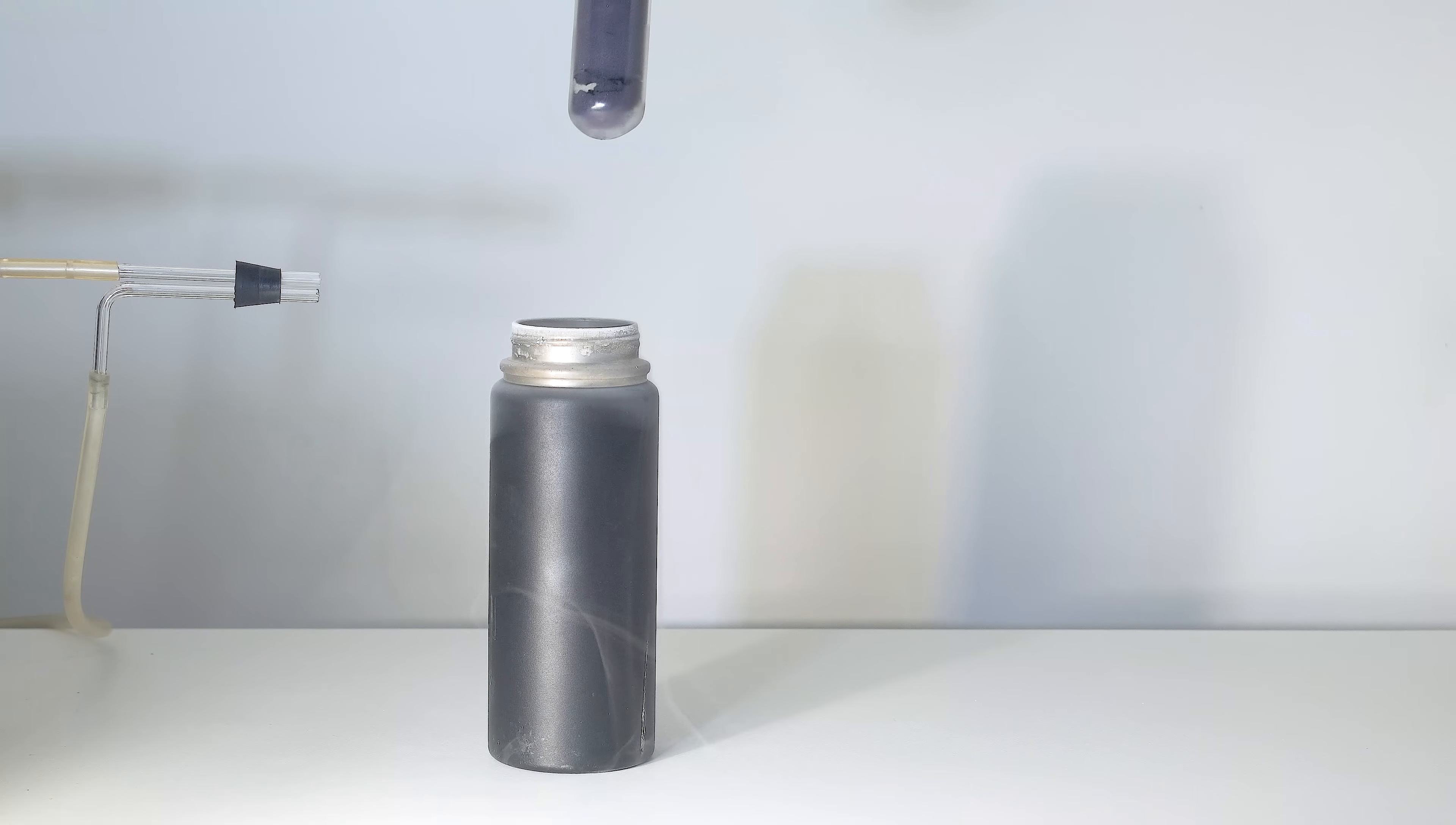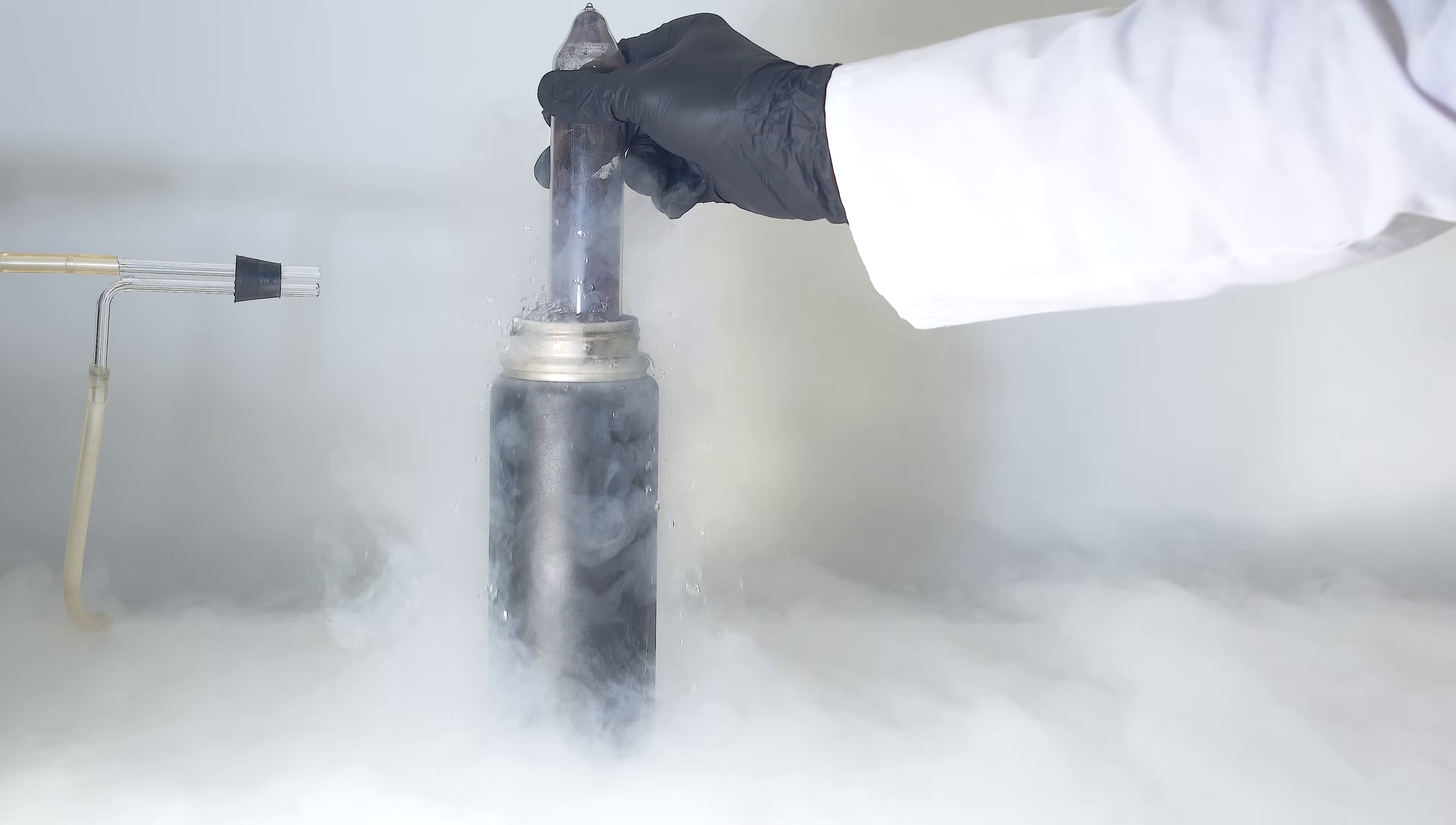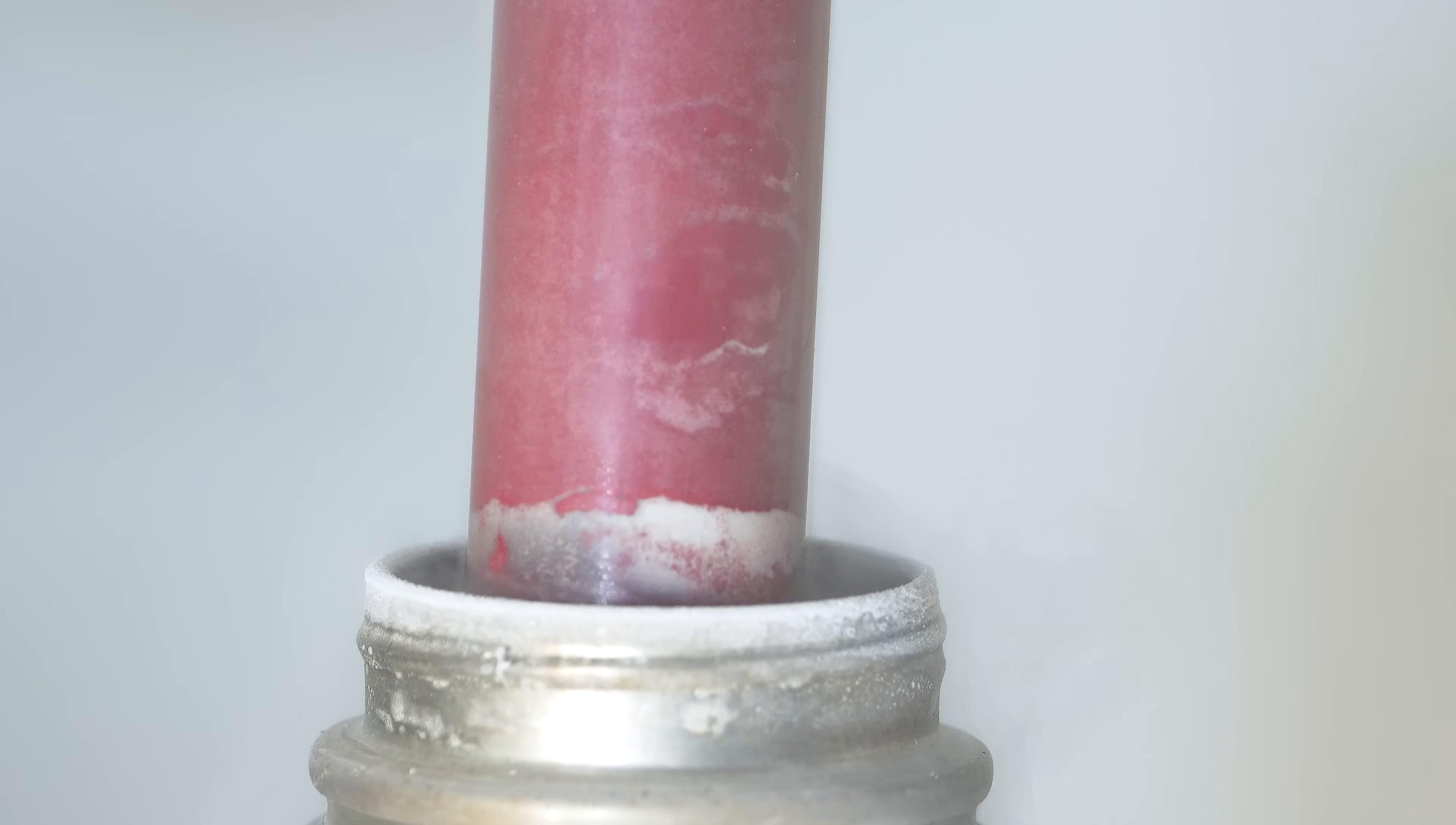This dark purple crystalline substance turns red when cooling in liquid nitrogen. This color is only retained at extremely low temperatures. If the ampoule is removed from liquid nitrogen, it quickly returns to a dark purple hue.